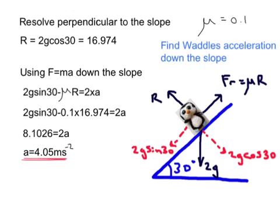So R equals 2g cos 30, which is three decimal places at least because it's part of our working out, 16.974 newtons.